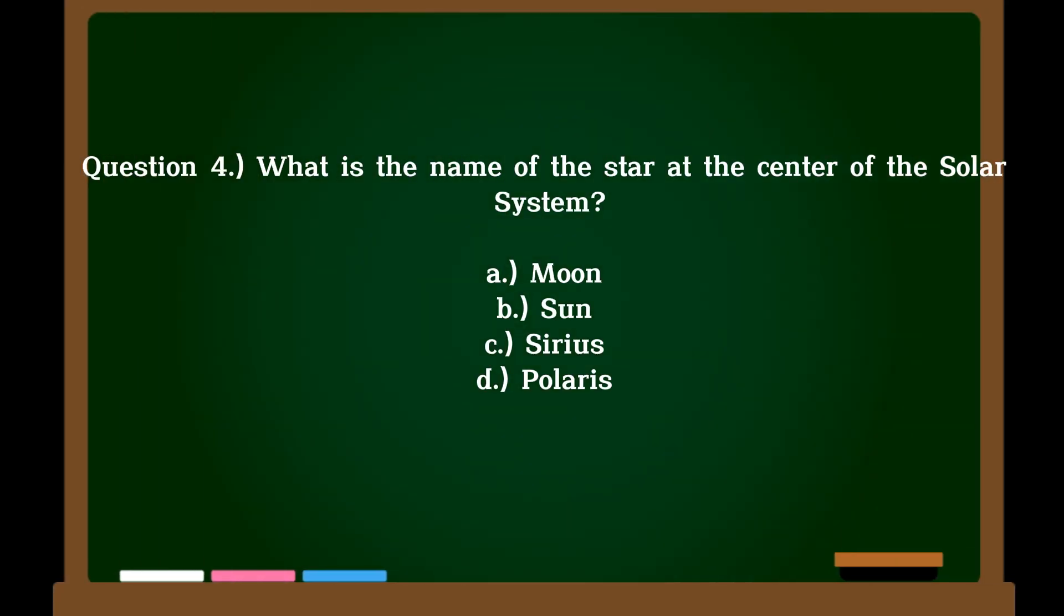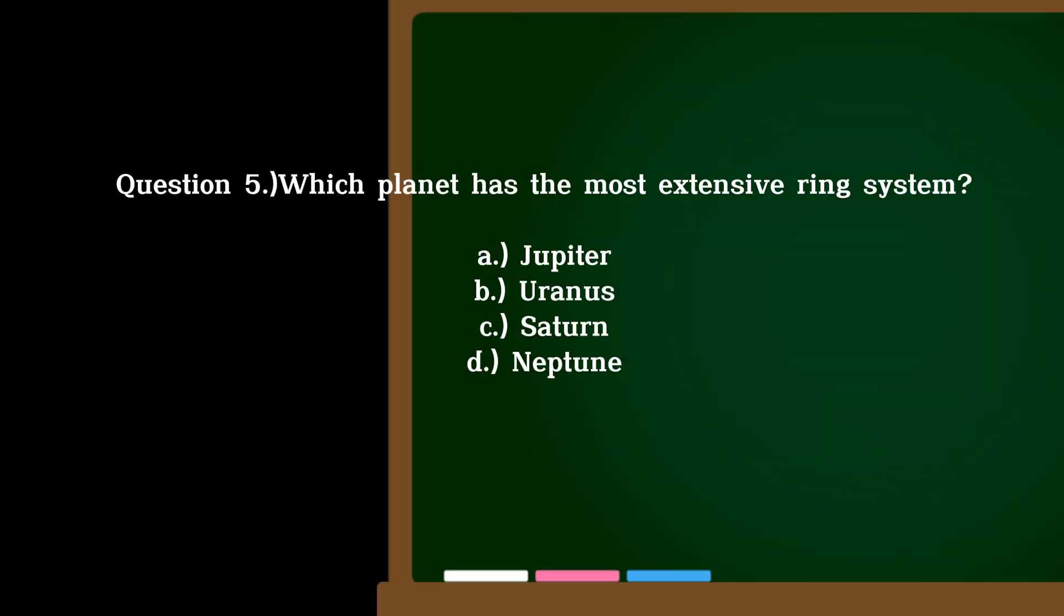Question 4. What is the name of the star at the center of the solar system? A. Moon, B. Sun, C. Sirius, D. Polaris. Correct answer: B. Sun.